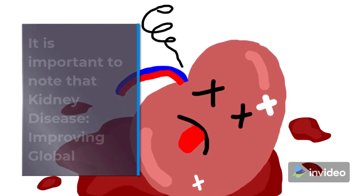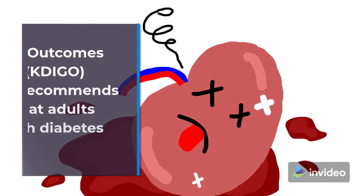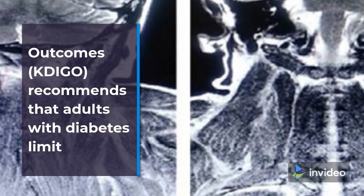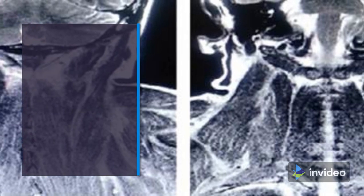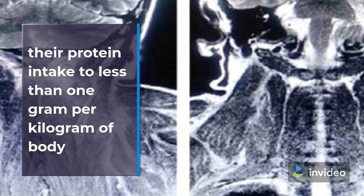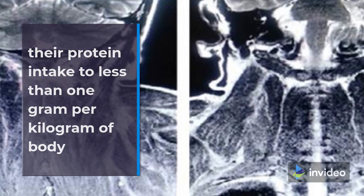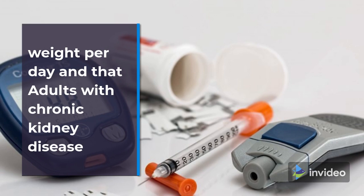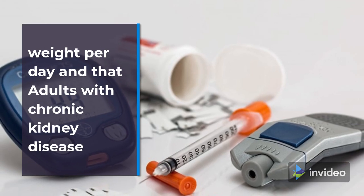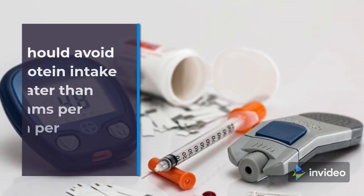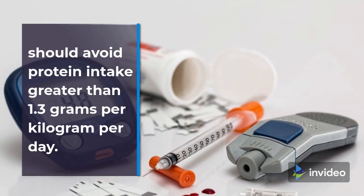It is important to note that Kidney Disease Improving Global Outcomes (K-DIGO) recommends that adults with diabetes limit their protein intake to less than 1 gram per kilogram of body weight per day, and that adults with chronic kidney disease should avoid protein intake greater than 1.3 grams per kilogram per day.